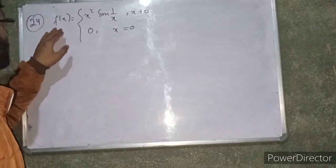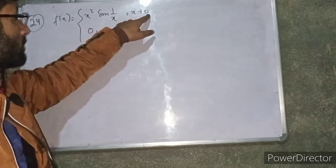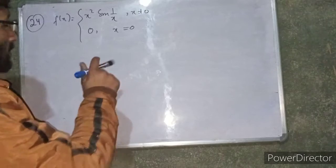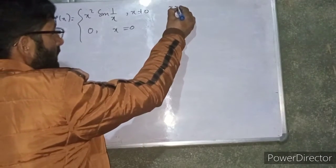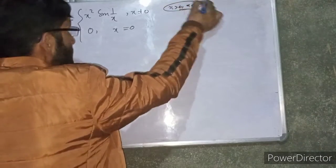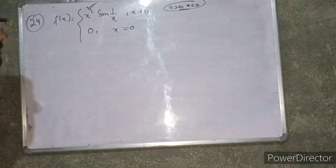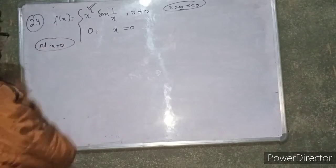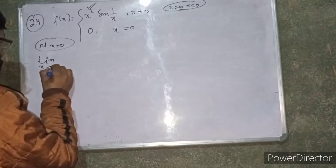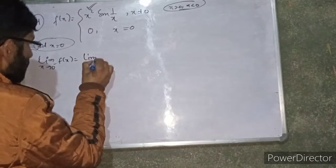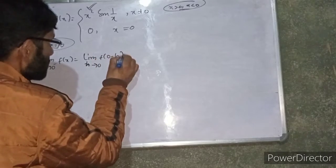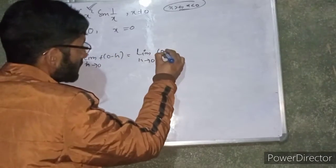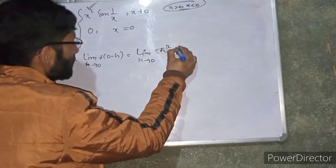Now question 24: if f of x equals x squared times sin(1/x) when x is not equal to 0, and 0 when x equals 0. We check if it is continuous at x equals 0. Left-hand limit: limit x tends to 0 negative of f of x equals limit h tends to 0 of f of 0 minus h, which equals limit h tends to 0 of (0 minus h) squared.